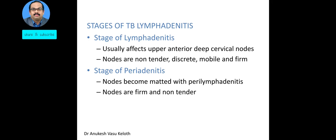Now we will look at the different stages of TB lymphadenitis. The first stage is the stage of lymphadenitis, which usually affects the upper deep anterior cervical nodes. The individual nodes show inflammation and are non-tender, discrete, mobile, and firm. This stage is followed by the stage of periadenitis, where the nodes become matted with perilymphadenitis. The nodes are still firm and non-tender.